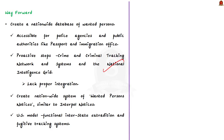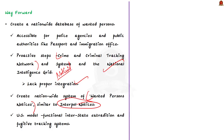We have taken some proactive steps. We have set up the Crimes and Criminal Tracking Network and System, and we also have the National Intelligence Grid. The author appreciates such initiatives, but notes that the National Intelligence Grid is concerned more about high-level crimes and the current databases lack proper integration. We need more integration in these databases, which can be done by creating a nationwide system of wanted persons notices — similar to Interpol notices — to help us track fugitives domestically. We can also implement the US model, which has a functional inter-state extradition and fugitive tracking system with proper protocol and technological connectivity, making information transfer easier, faster, and procedural.